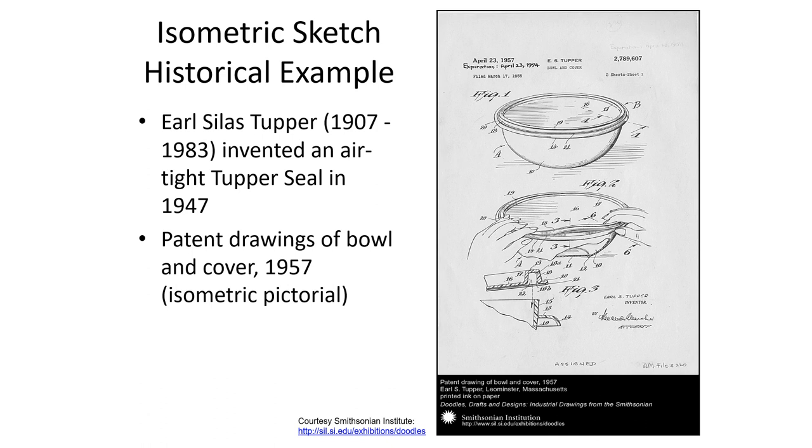Here's another example of isometric pictorial. You could tell the lines are coming back this way. It's an isometric. A historical example from our buddy Earl Silas Tupper invented an airtight Tupper seal in 1947 and patent drawings of bowl and cover in 1957. And this is an isometric pictorial, but he did it without grid lines. So it's possible. And he did it. He made a circle. So that's possible as well. But if you're just looking at this, did I just draw a circle on this screen? No, that's more of an ellipse. So your circles become ellipses in isometric.